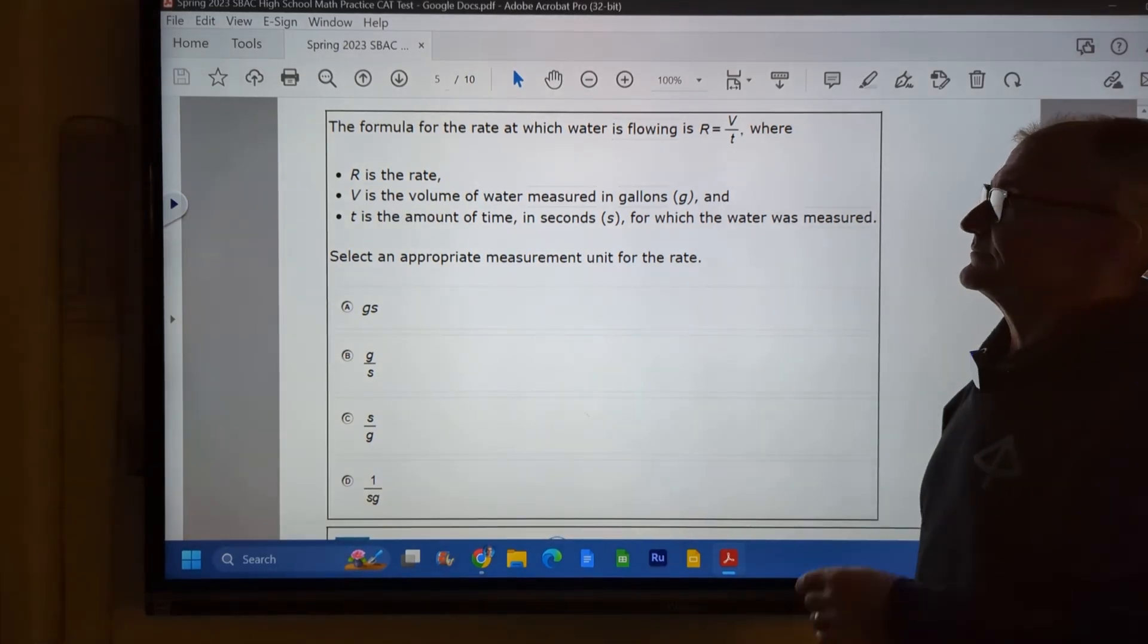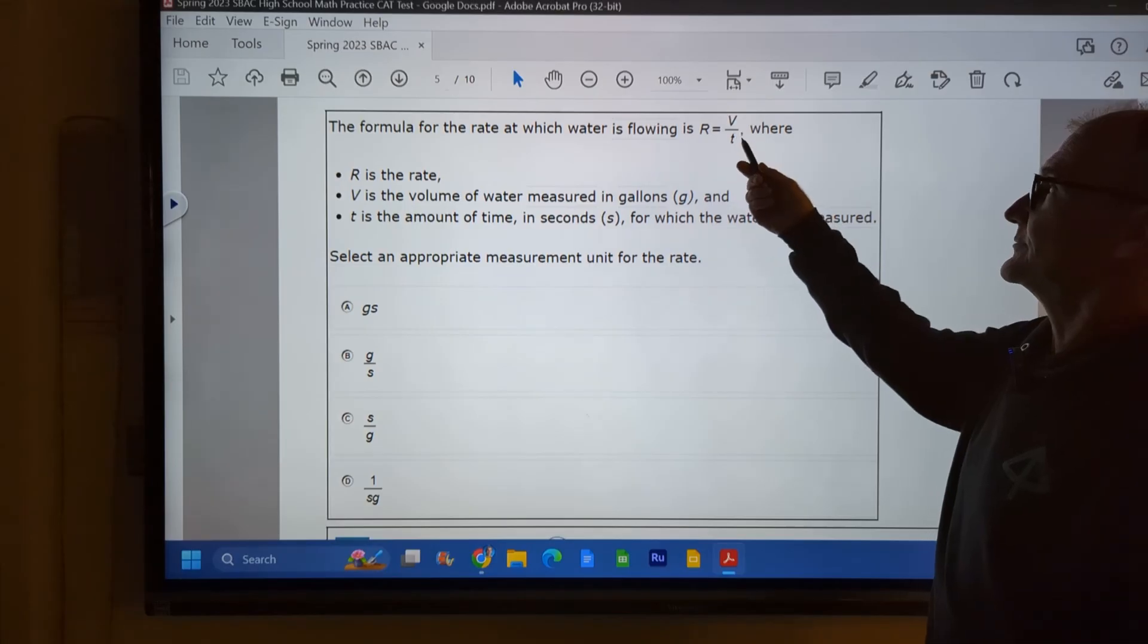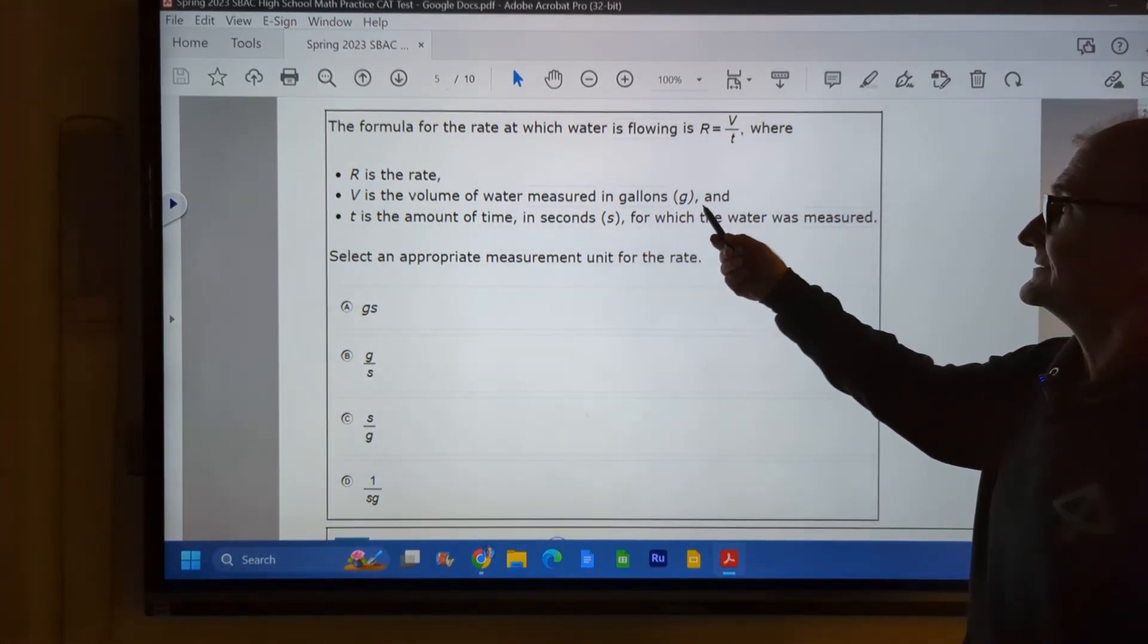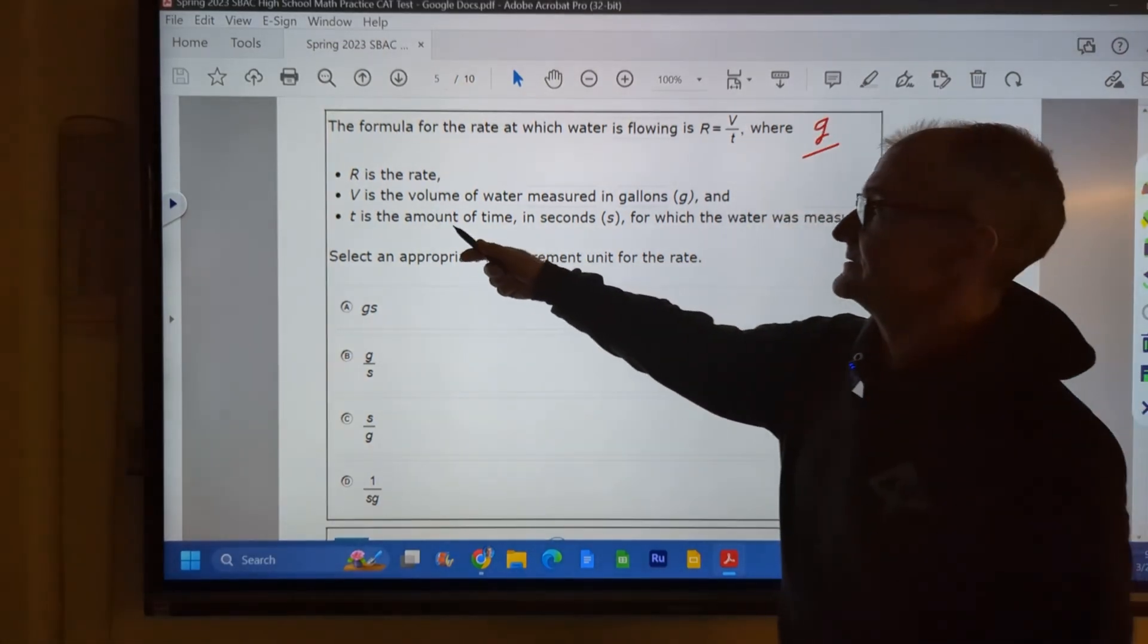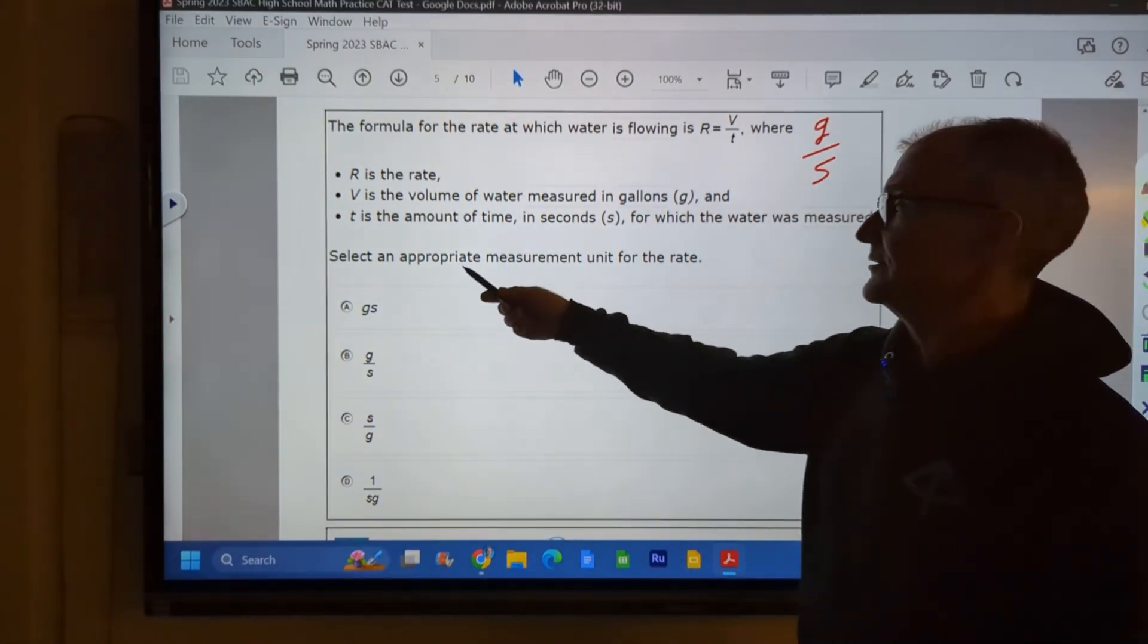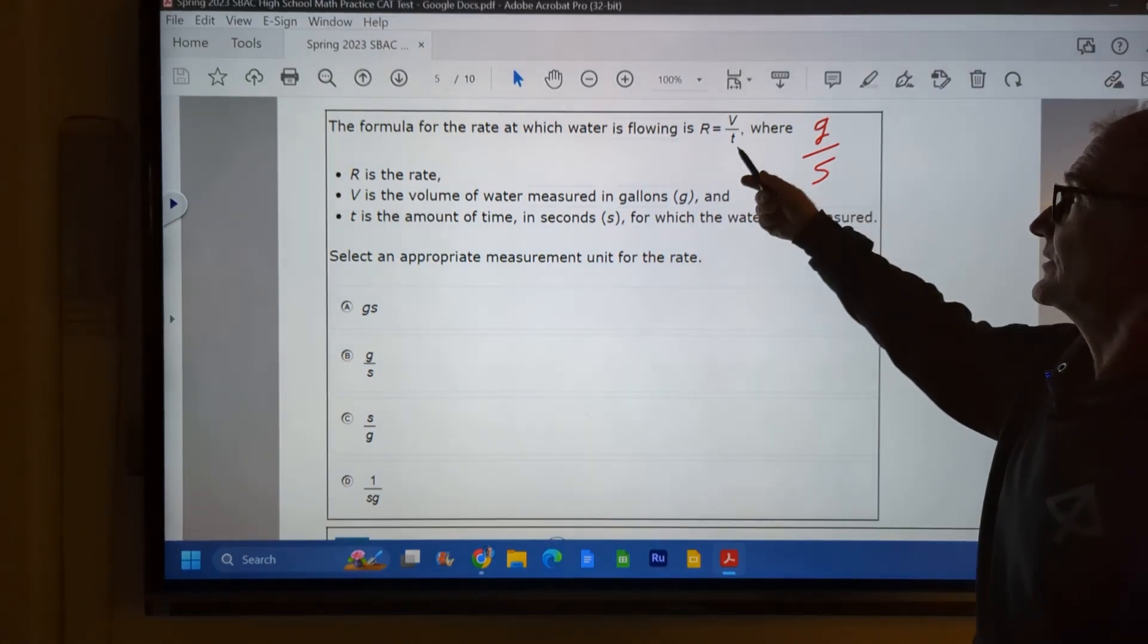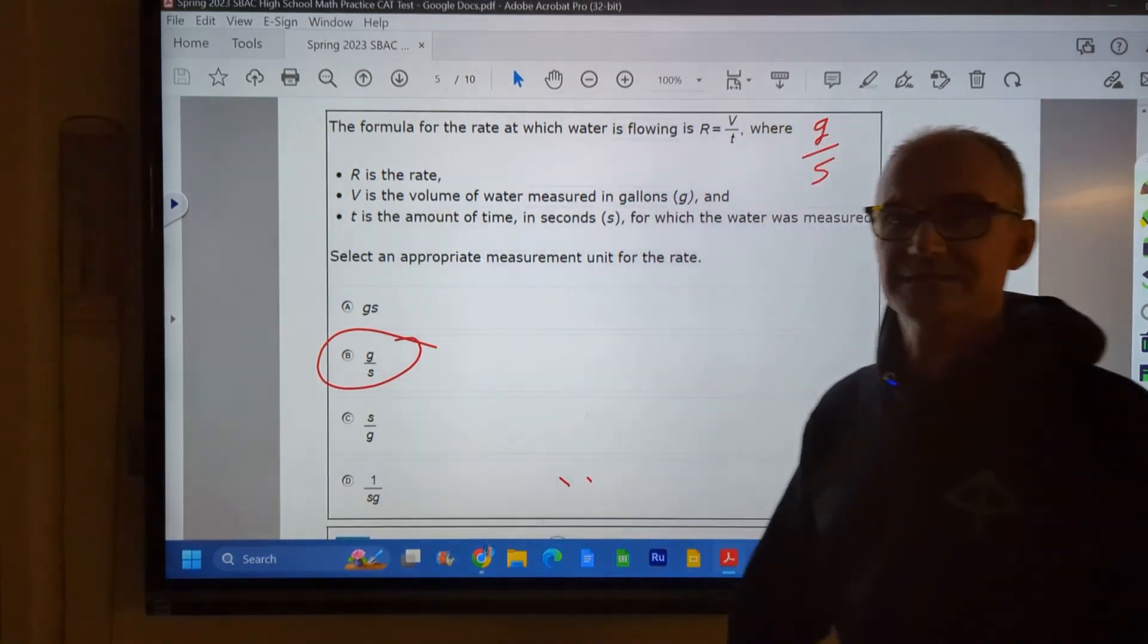All right, we have another rate problem. The formula for rate, which water is flowing rate, is equal to volume over time. R is rate, V is volume in gallons. So this is gonna be gallons. And time is seconds. So our flow rate is gallons per second. Select the appropriate measurement unit for the rate. Well, it's volume over time, so gallons over second. Answer B right there.